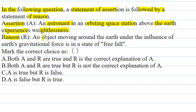Reason: An object moving around the earth under the influence of earth's gravitational force is in the state of free fall. So here the reason states that when a body is orbiting around the earth under the influence of gravitational force, it experiences free fall.